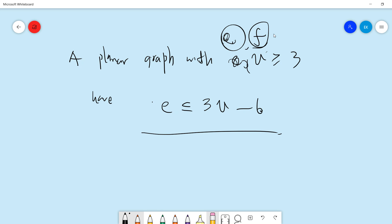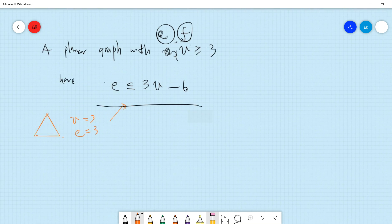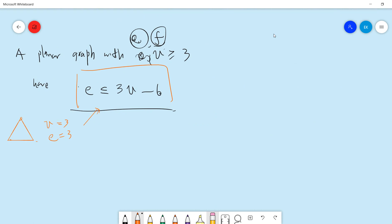Okay, so for example, if you plot the triangle, right, so your vertices is 3, your edge is 3, right, so you satisfy this property. And you can check, you can plot any graph and check this is always correct.